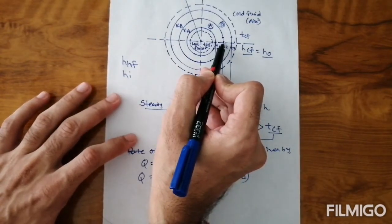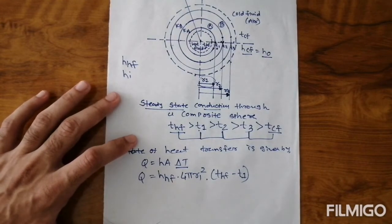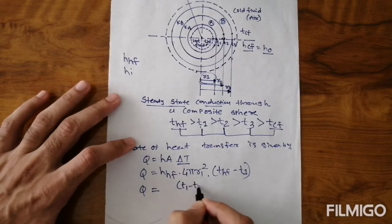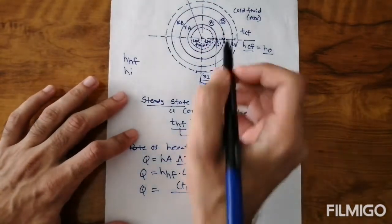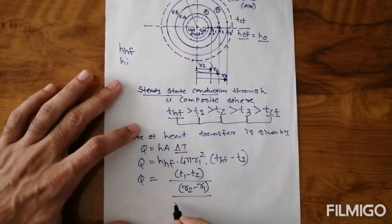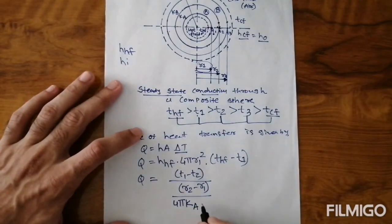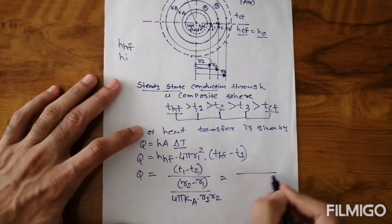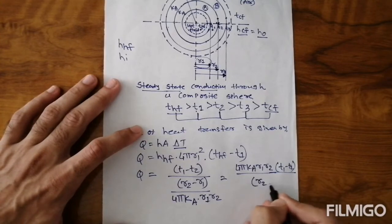Next, for heat transfer from T1 to T2 — solid to solid — conduction is considered. Using the hollow sphere conduction equation already derived: Q = 4πKA × R1 × R2 × (T1 − T2) / (R2 − R1).